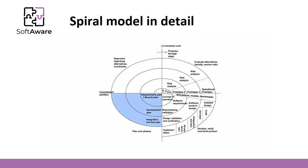The final phase is called the Evaluation and Planning phase, or just the Planning phase. During this phase, the outcomes of the current iteration are evaluated and the next iteration is planned. The results are also provided to the customer to receive feedback.